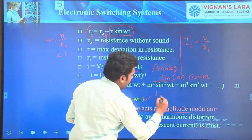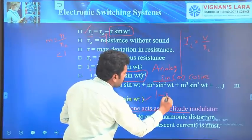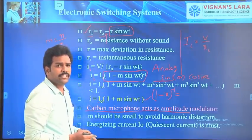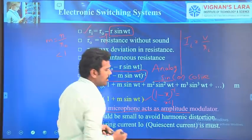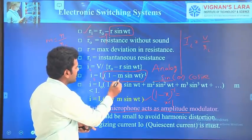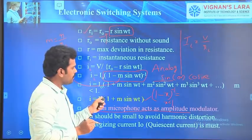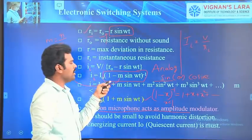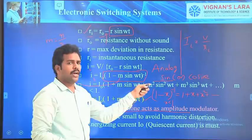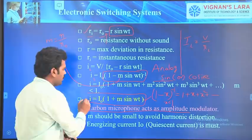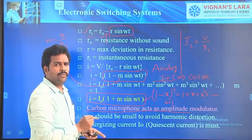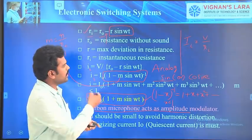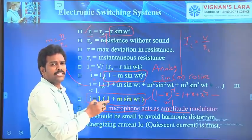We know that this expression is in the form of (1 − x)^(−1). We can apply binomial expansion to expand this. The condition to apply binomial expansion is that x must be less than 1. In this case M is less than 1, so we can apply the expansion. The formula gives 1 + x + x² + and so on. Since M is small, the square of M is very very small, so we can neglect the higher order terms. This final expression is similar to the amplitude modulated wave. Therefore, we can say that this microphone acts like an amplitude modulator, where M is called the modulation index. This is the mathematical derivation proving that the microphone acts like an amplitude modulator.